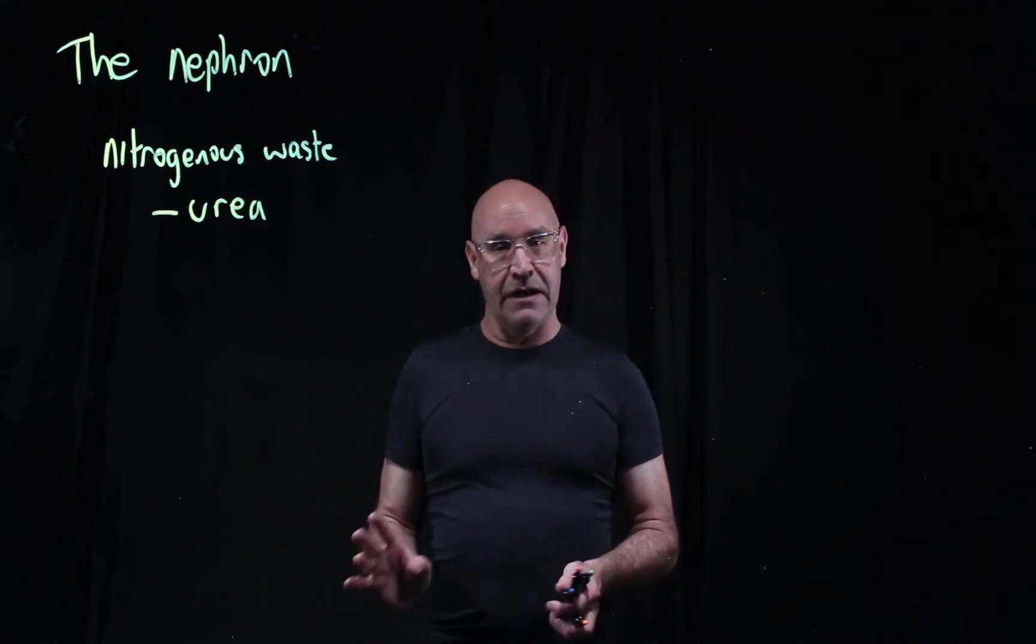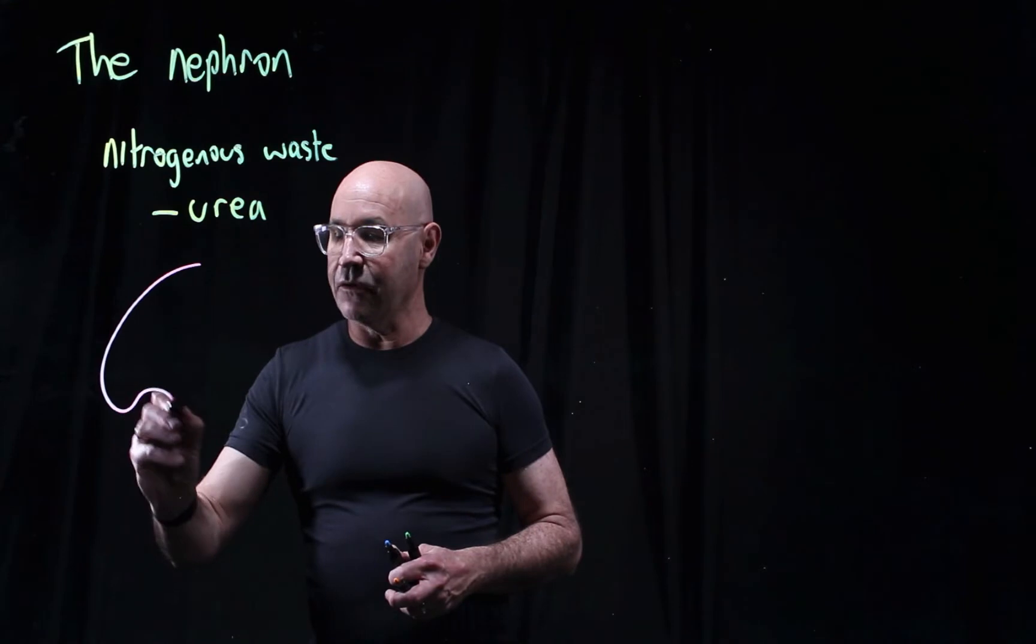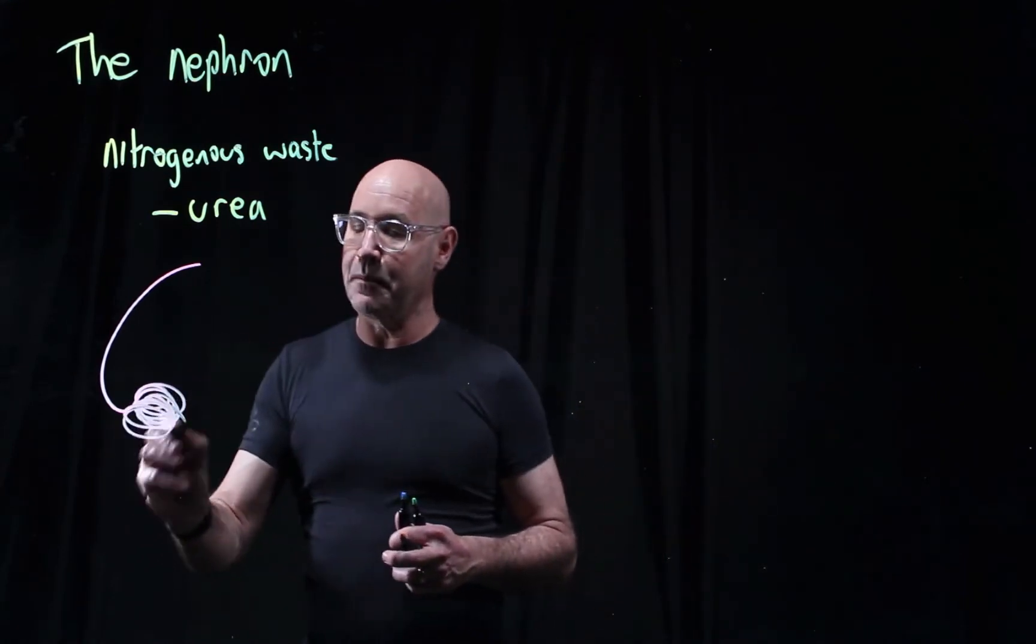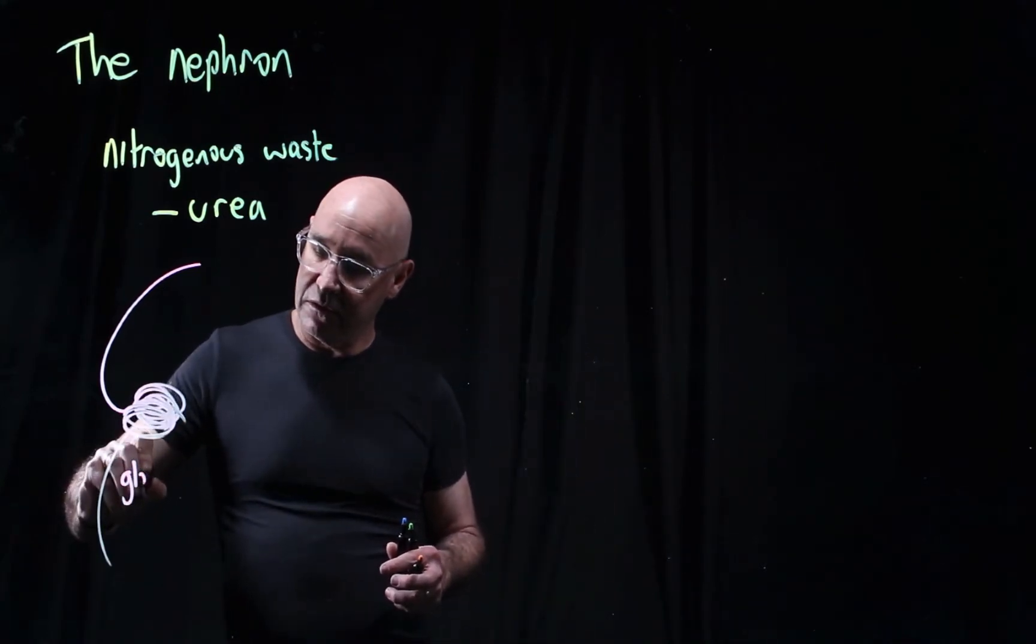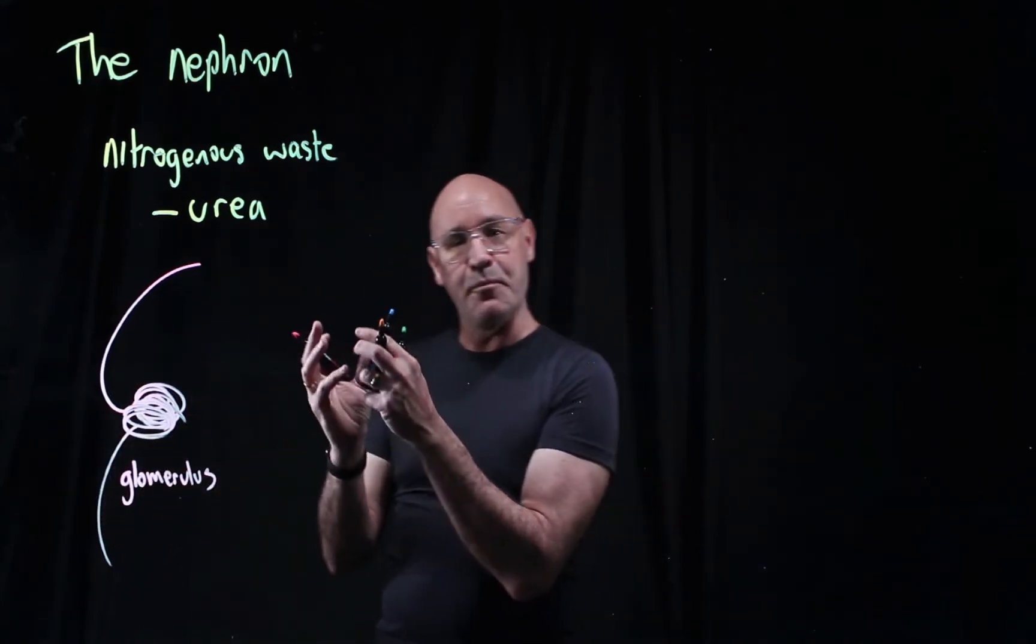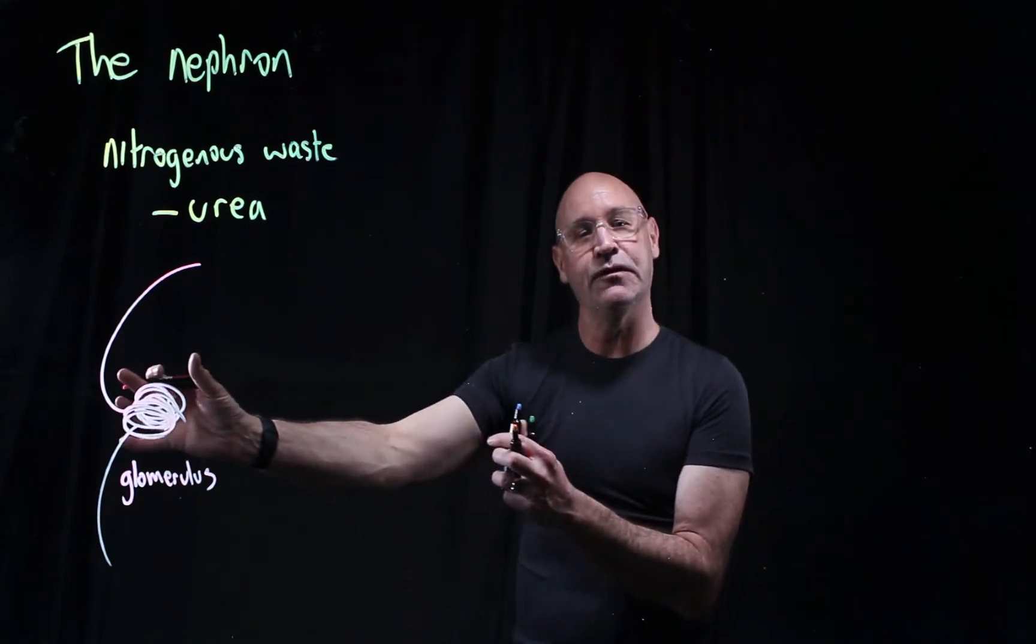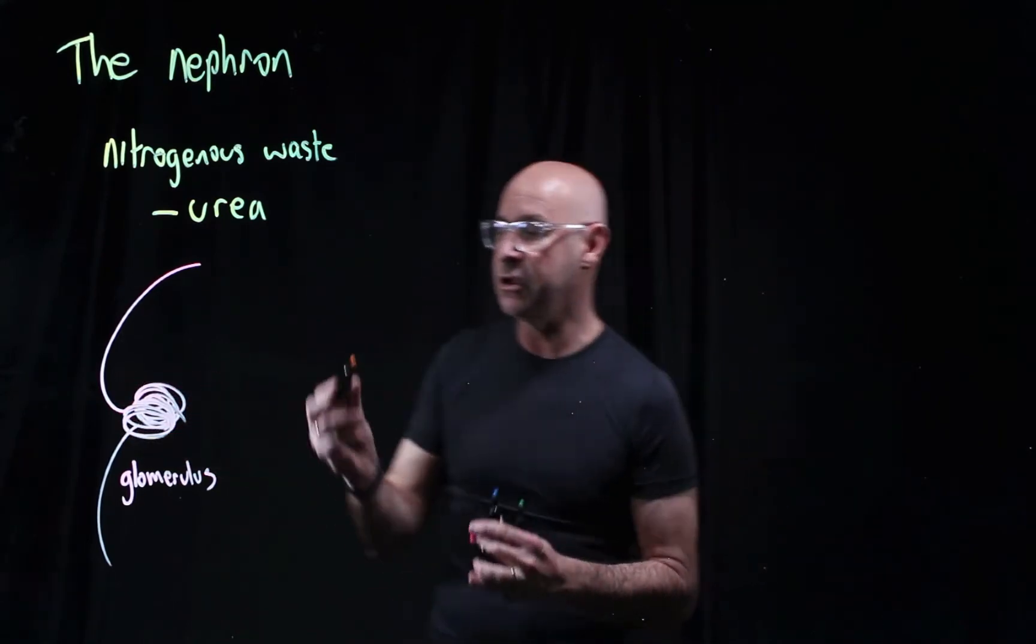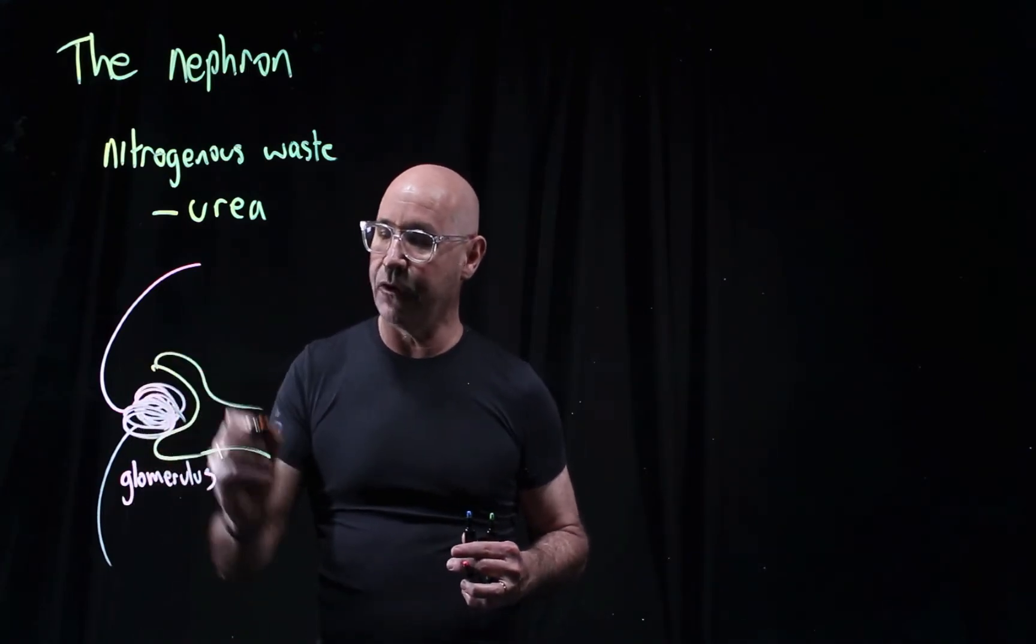Let's talk about the structure and function of the nephron. First, we start with capillaries that make a big ball called the glomerulus. It's a high-pressure ball where nearly everything gets filtered out and captured by the Bowman's capsule, which is the start of the nephron.